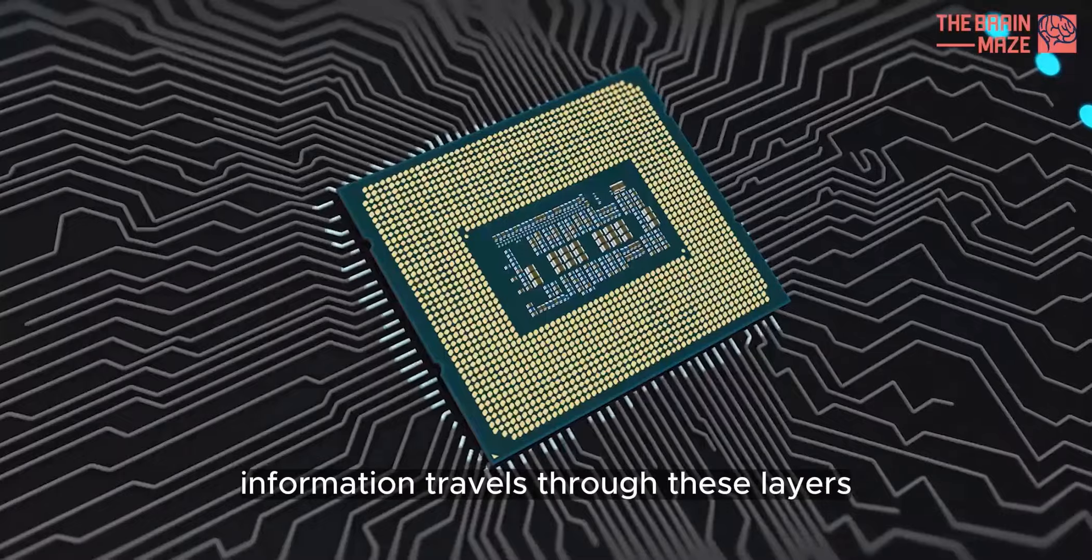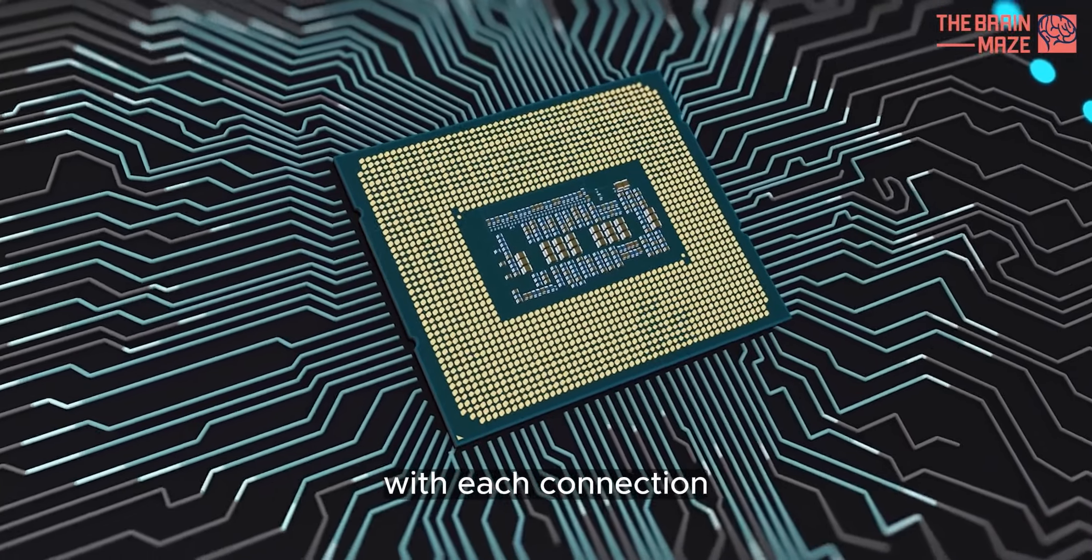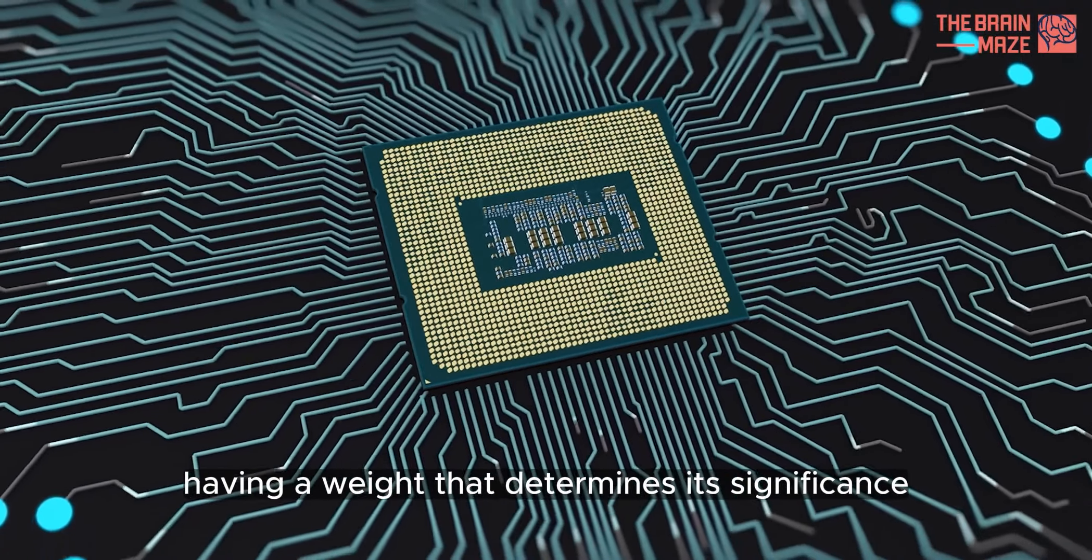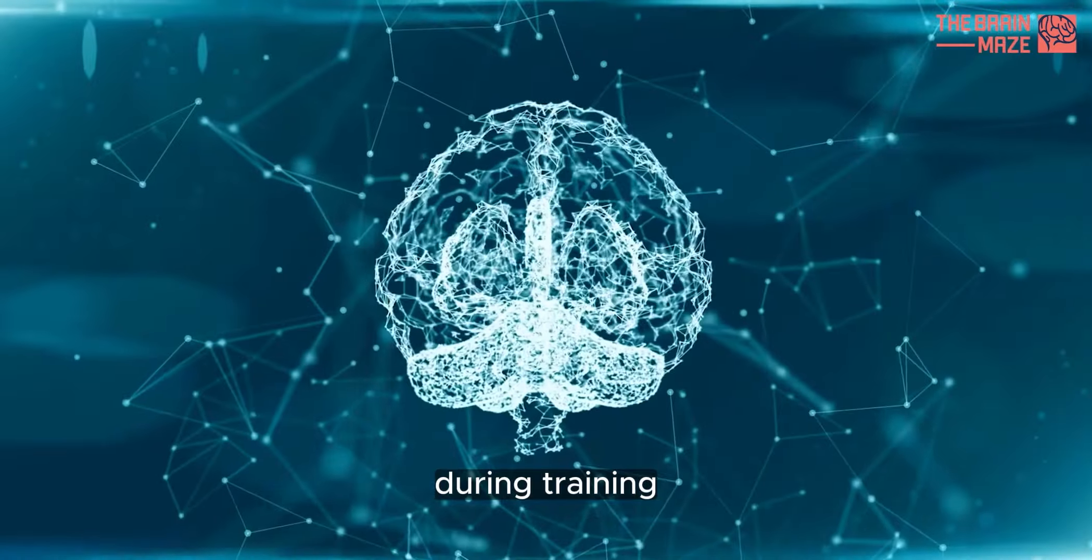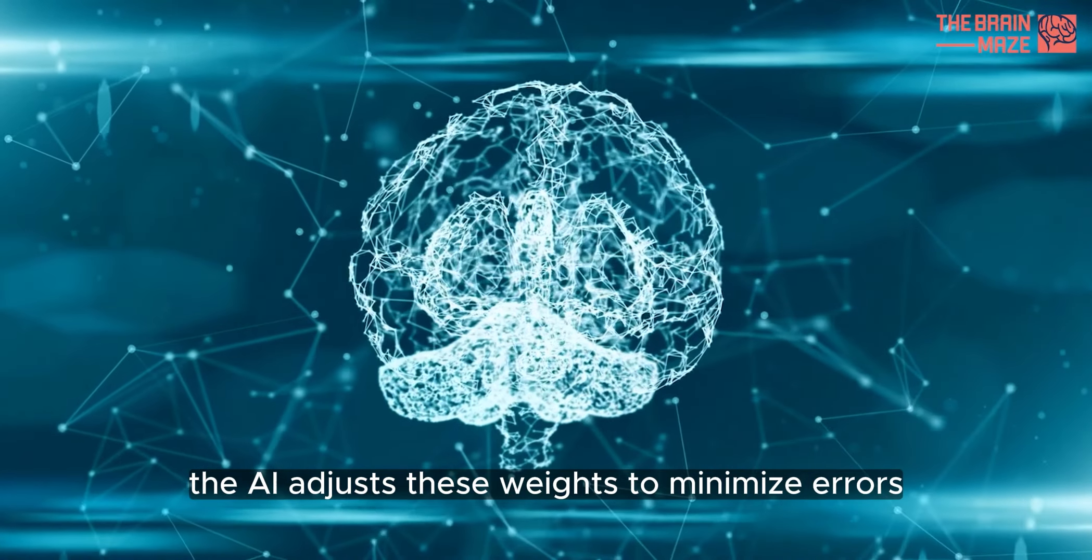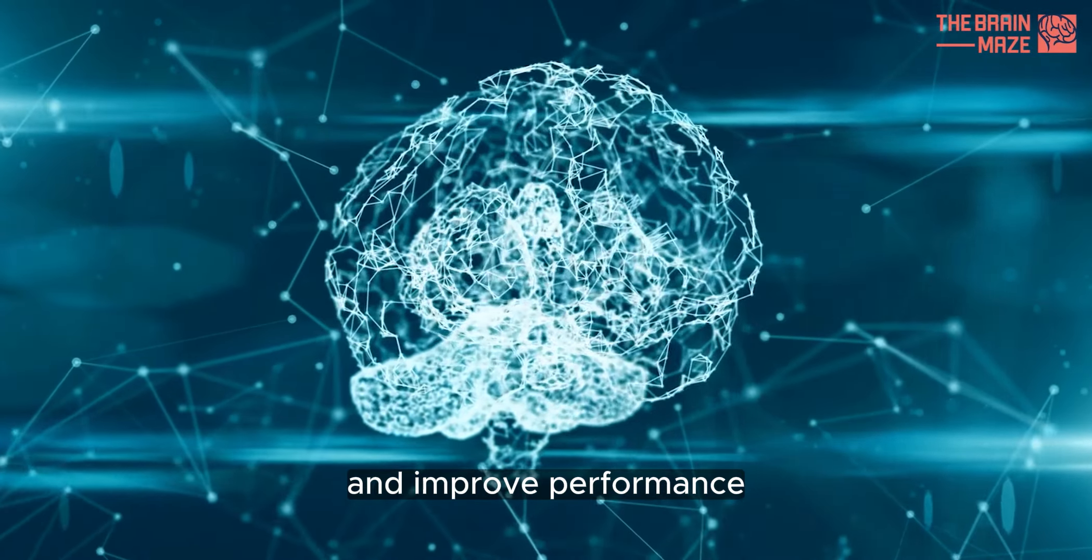Information travels through these layers, with each connection having a weight that determines its significance. During training, the AI adjusts these weights to minimize errors and improve performance.